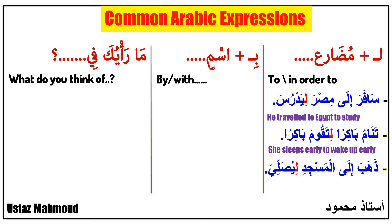Next sentence: 'Dhahaba ilal-masjid li-yusalli' — it means 'he went to the mosque to pray.' 'Dhahaba ila' means 'he went to,' 'al-masjid' means 'the mosque,' 'li-yusalli' means 'to pray.' As you see, 'li' is followed by the present tense 'yusalli.'